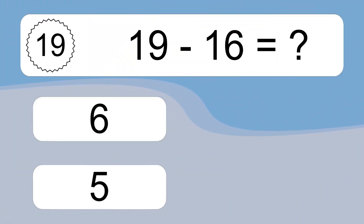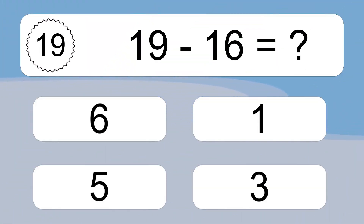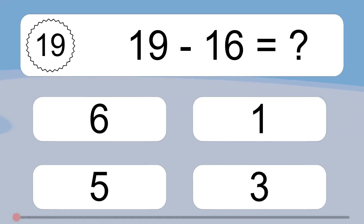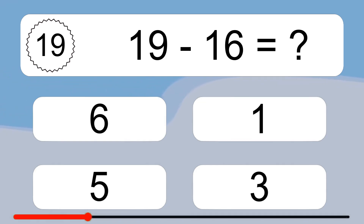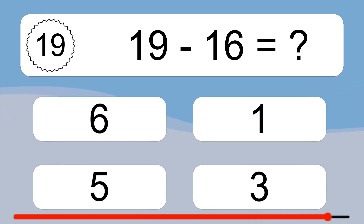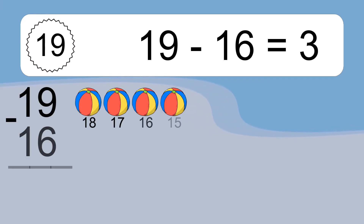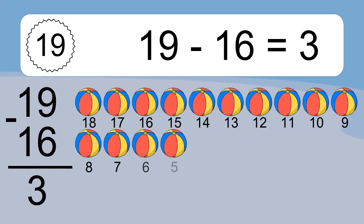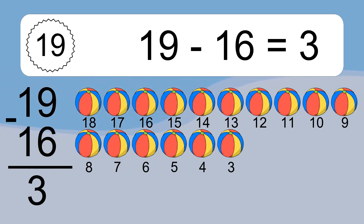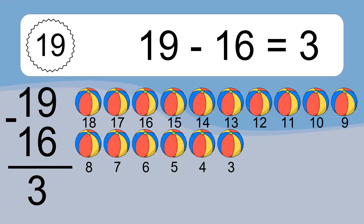19 minus 16 equals what? 19 minus 16 equals 3. Let's count it: 18, 17, 16, 15, 14, 13, 12, 11, 10, 9, 8, 7, 6, 5, 4, 3.